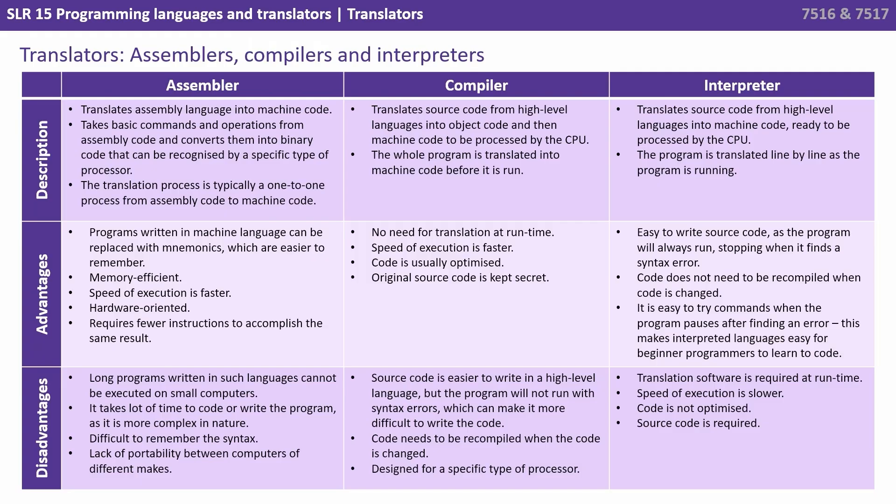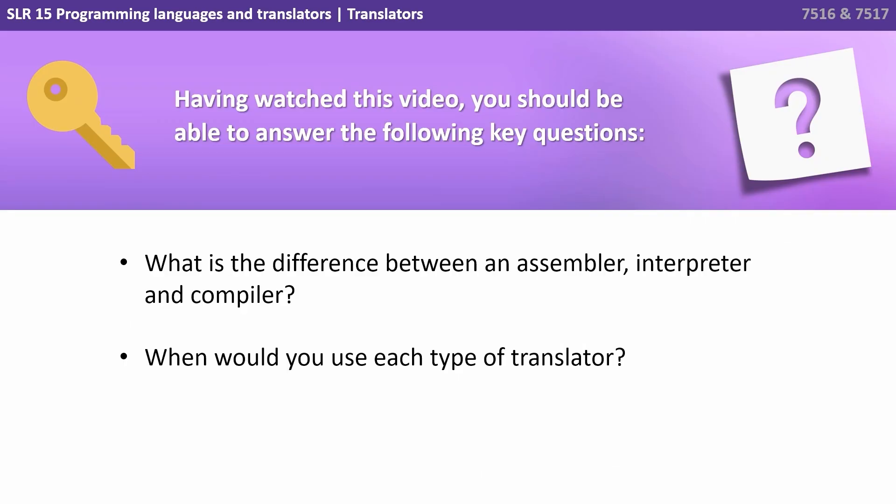On the screen now is a summary table that provides a description and some advantages and disadvantages of the three main types of translators: assemblers, compilers and interpreters. Having watched this video you should be able to answer the following key questions: What is the difference between an assembler, interpreter and a compiler? And when would you use each type of translator?